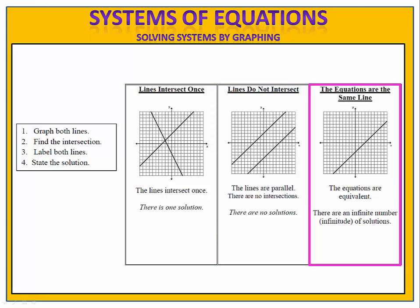Finally, on occasion, you might graph two equations and find out that they're right on top of each other — they're the same line. In this case, the equations are equivalent and they have identical solution sets. Because the solution sets are identical, we say there are an infinite number of solutions, because the solutions will satisfy the equations both simultaneously at all times.